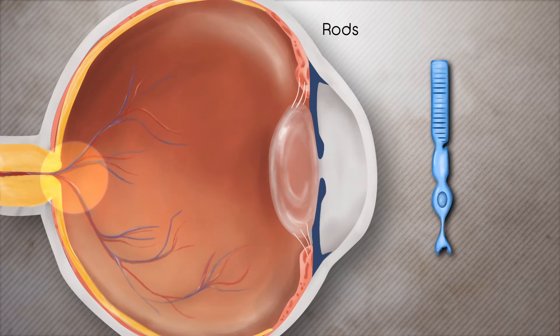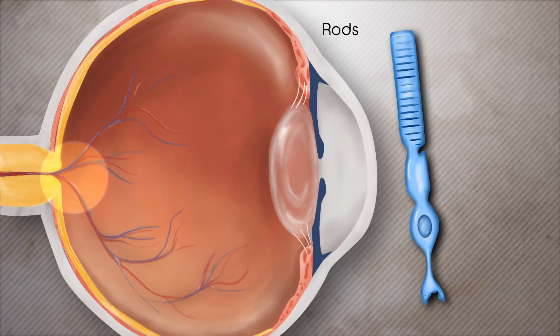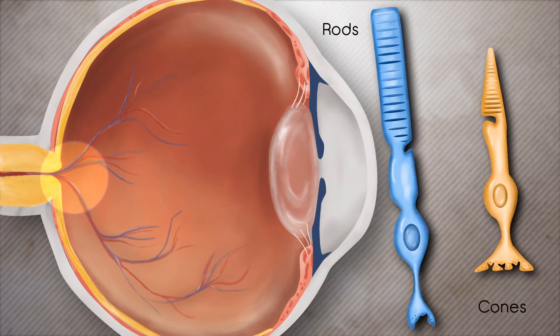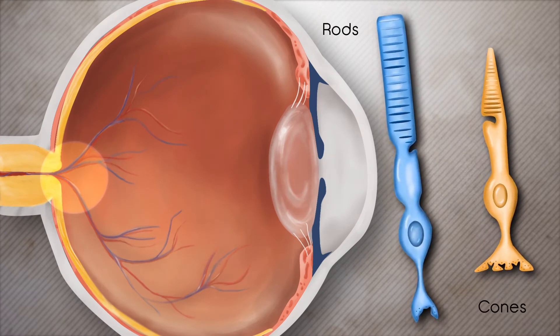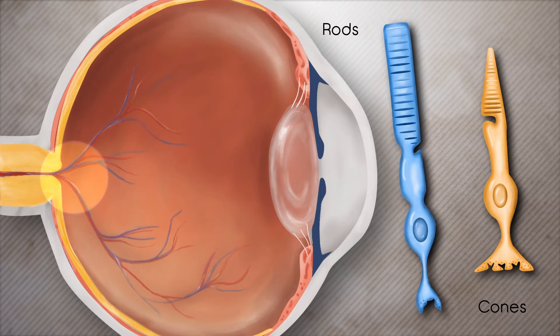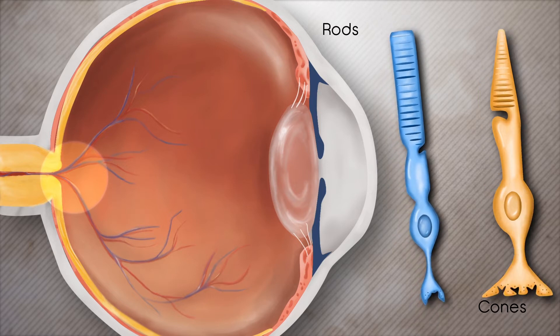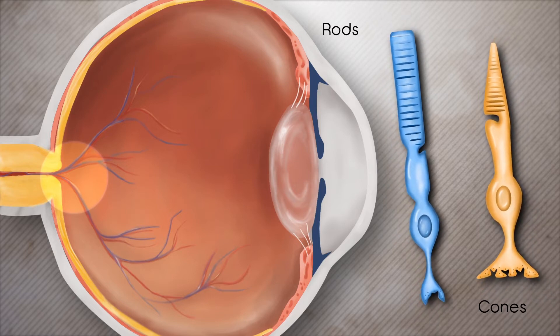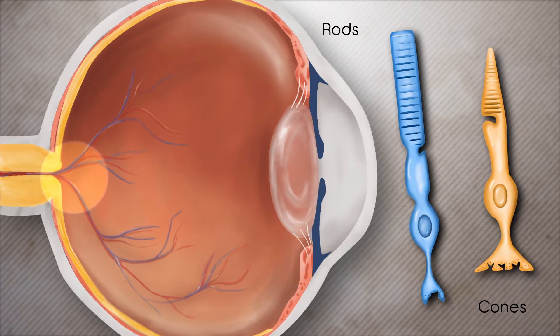The retina is composed of rods and cones. Rods allow peripheral side vision and motion detection. Cones provide clear sharp central vision and detect detail and color.